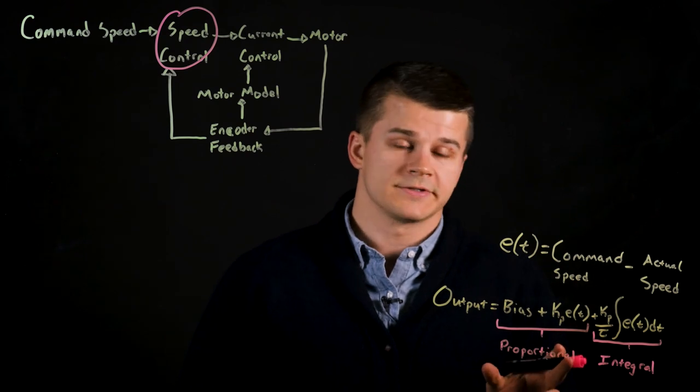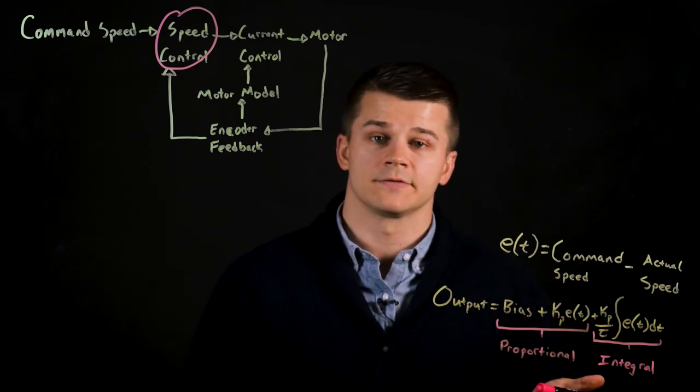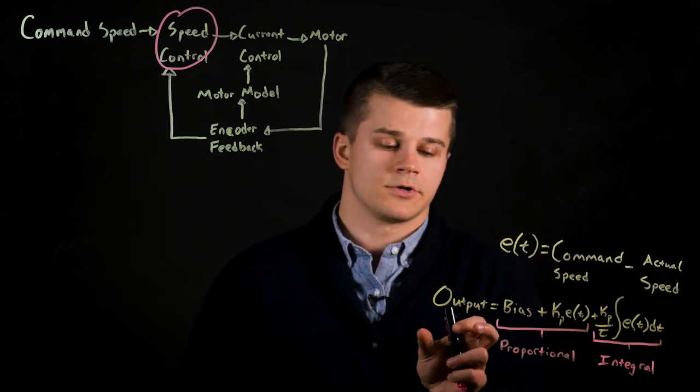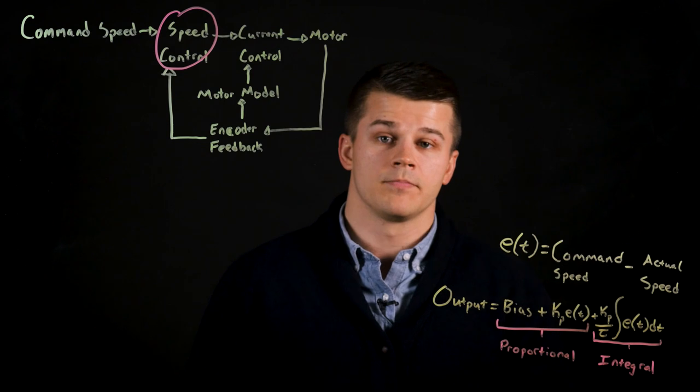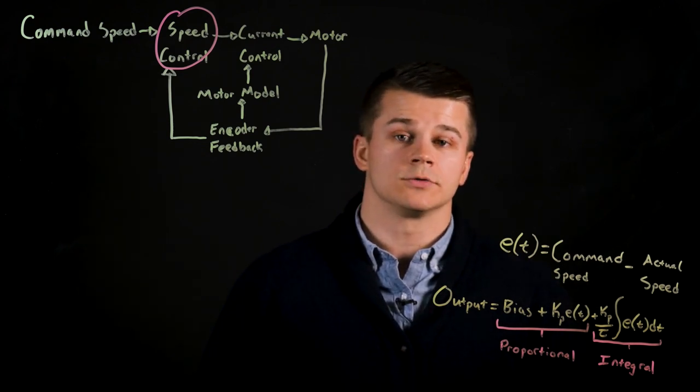Now let's focus on the proportional section in a little bit more detail. The first part of the proportional is the bias. In a standard control system the bias will be simply set to your desired output value on startup. Thus with no error your output value will be exactly equal to your command value.